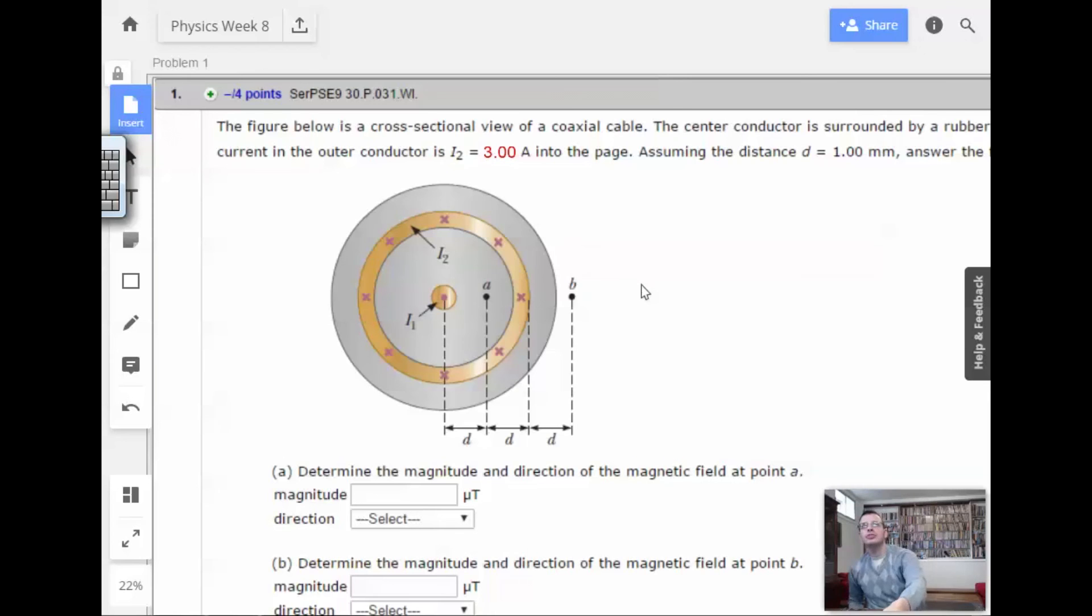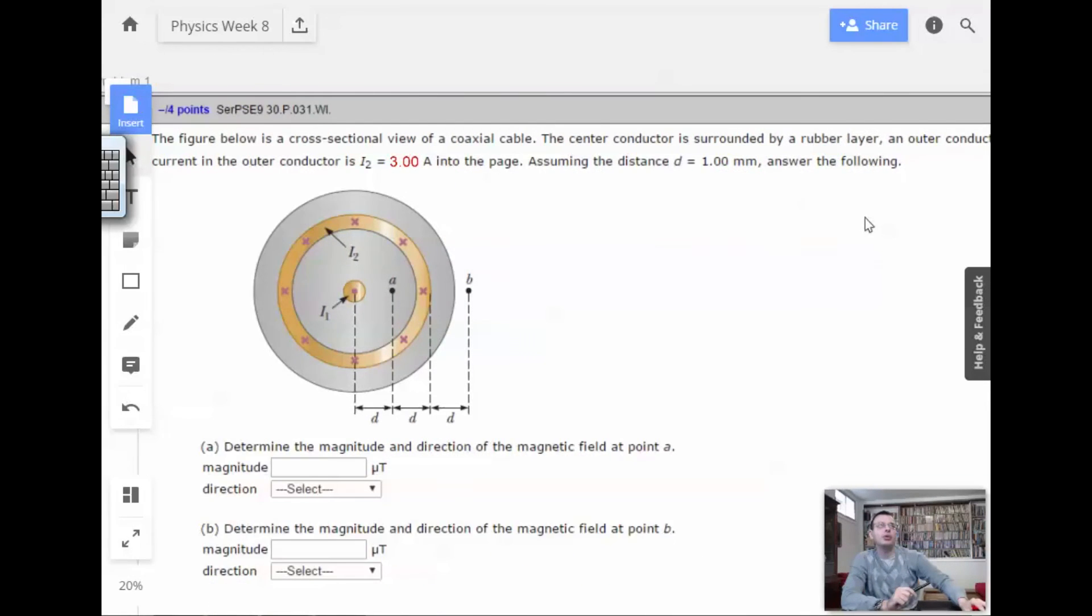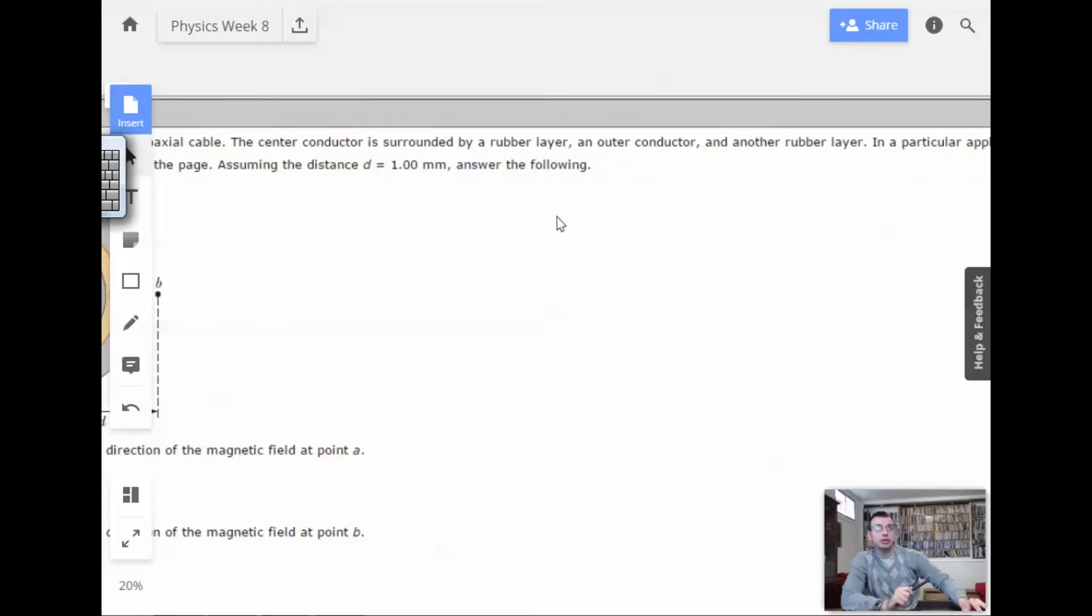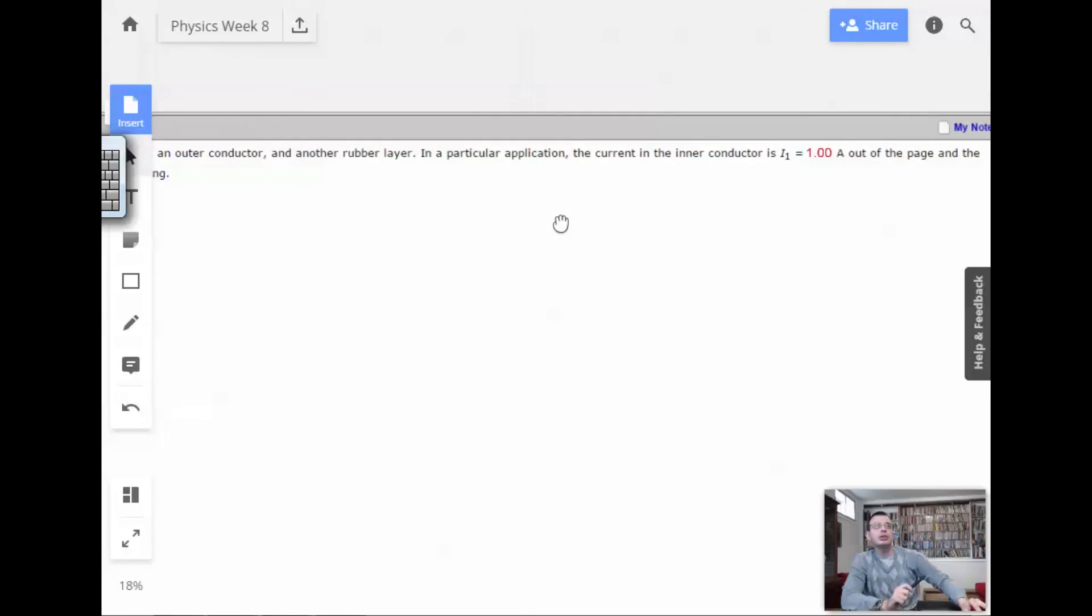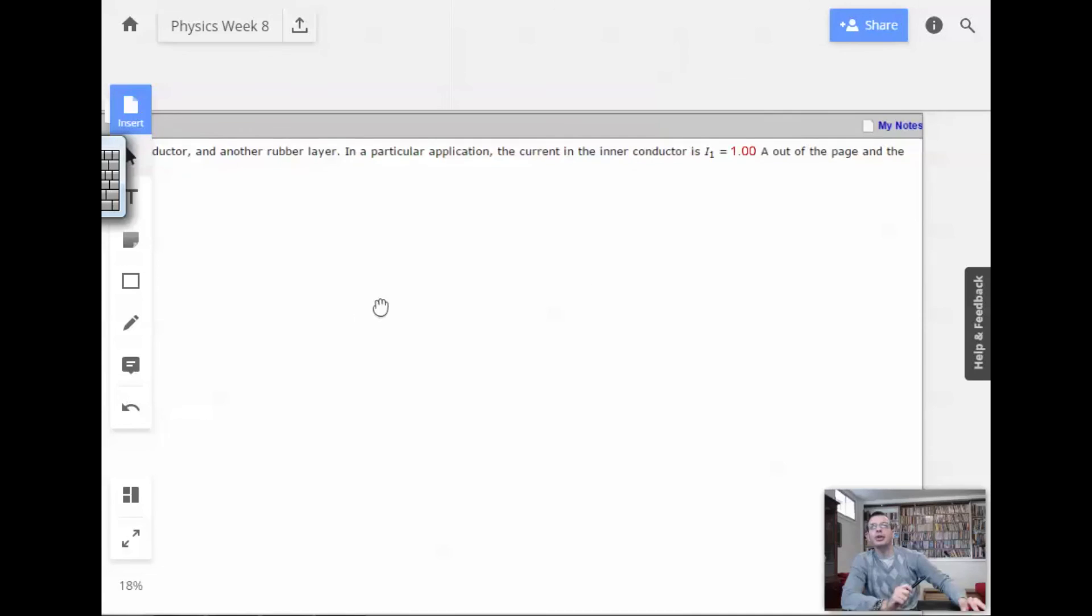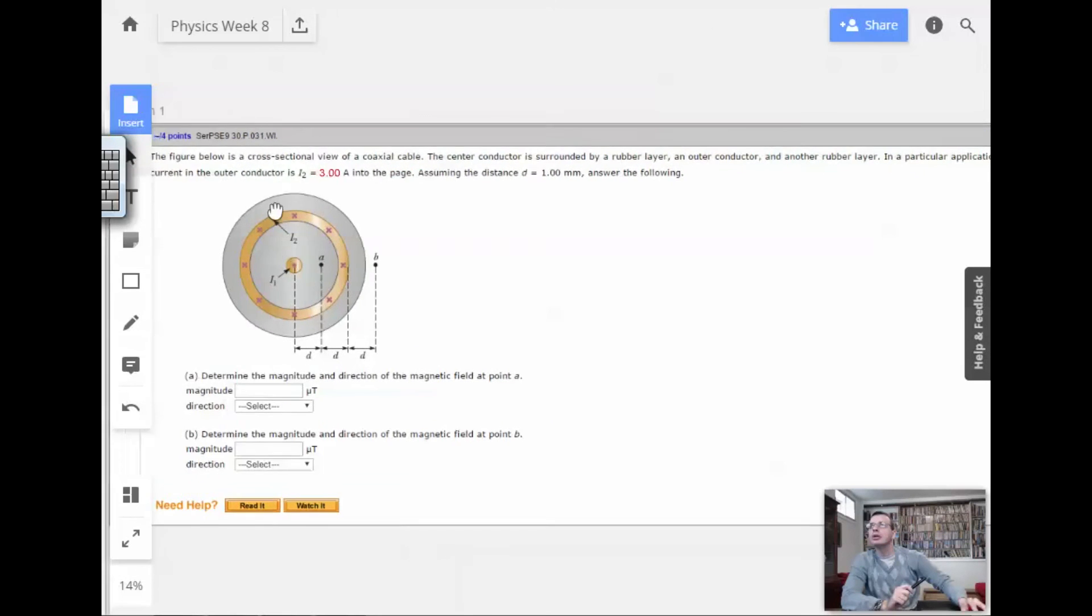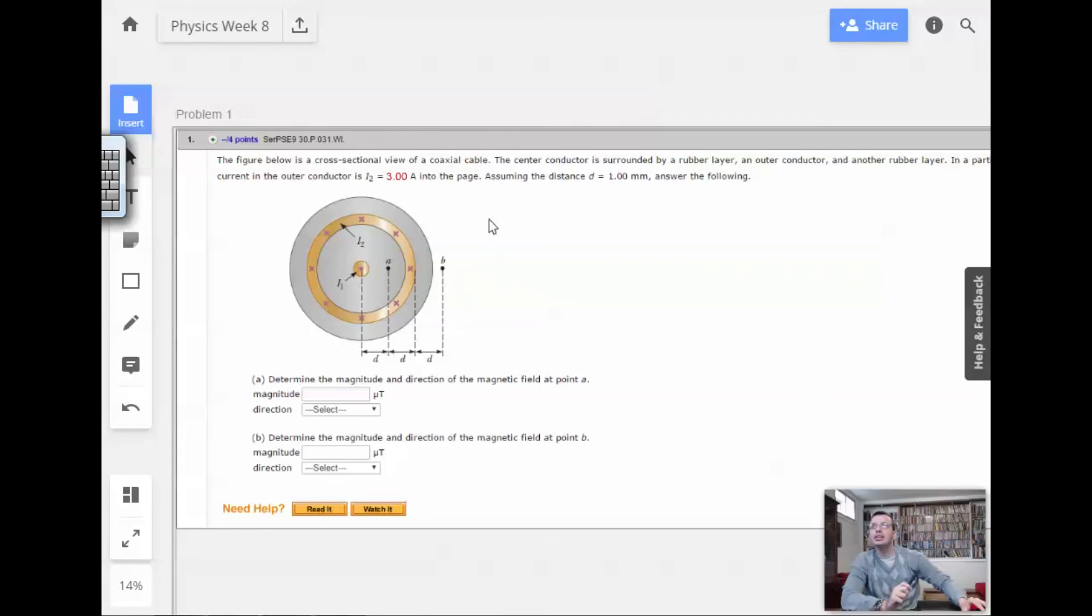Figure below is a cross-sectional view of a coaxial cable. The center conductor is surrounded by a rubber layer, an outer conductor, and another rubber layer. In a particular application, the current in the inner conductor is 1 amp out of the page, and the current in the outer conductor is 3 amps into the page. Assuming the distance d is 1 mm, answer the following.